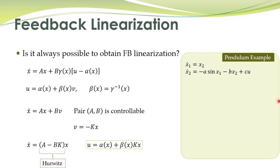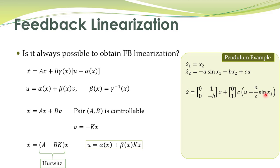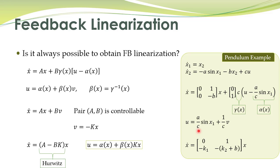Comparing this general theory with the pendulum example, we can see the pendulum system is in exactly this form. Writing it in matrix form: x_dot = A·x + B·(γ(x)·u − α(x)), where α(x) and γ(x) are identified from the pendulum equations. The control law U is selected accordingly, and if the system is in this form we can obtain feedback linearization.